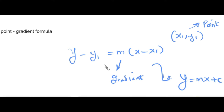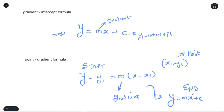After substituting, you simplify it — it starts off in point-gradient form and it will definitely end in y = mx + c form. Now let us try an example using both forms and see how we can solve questions.